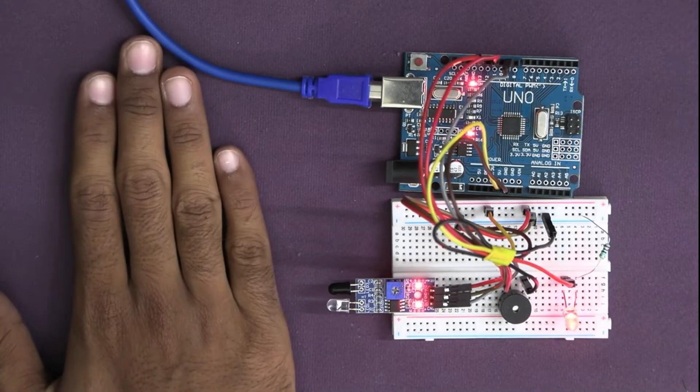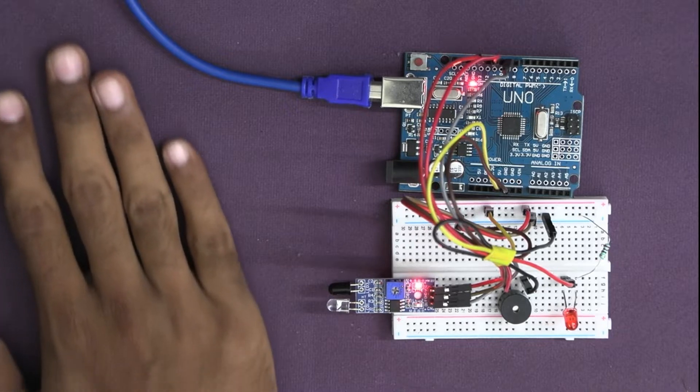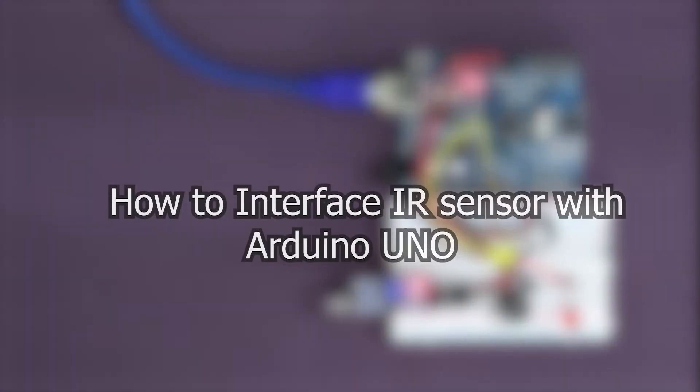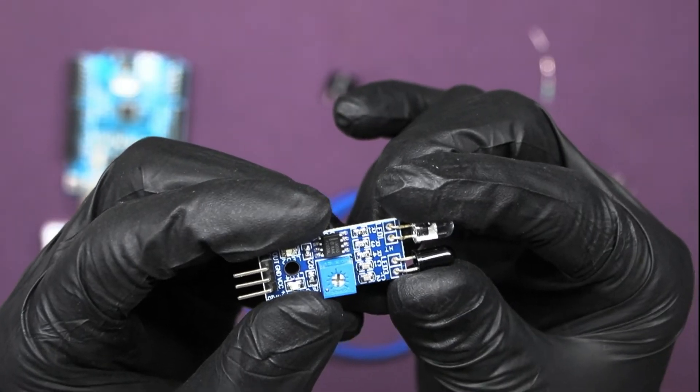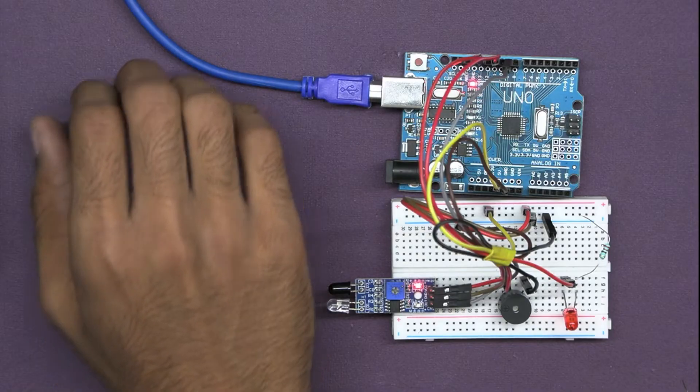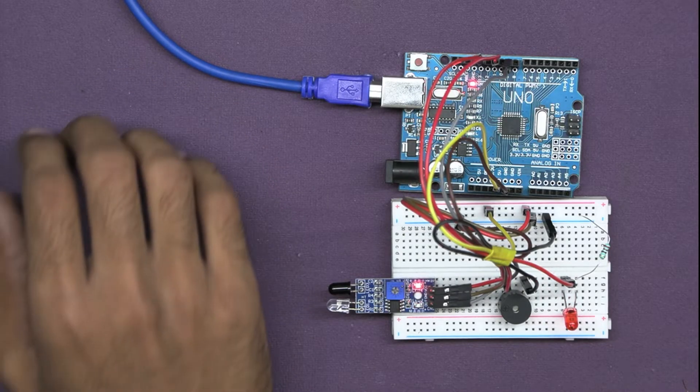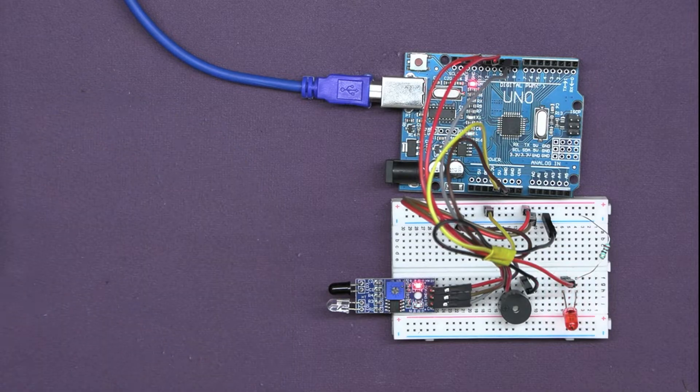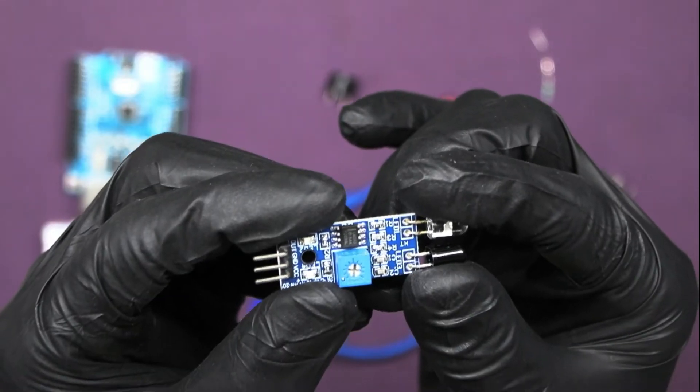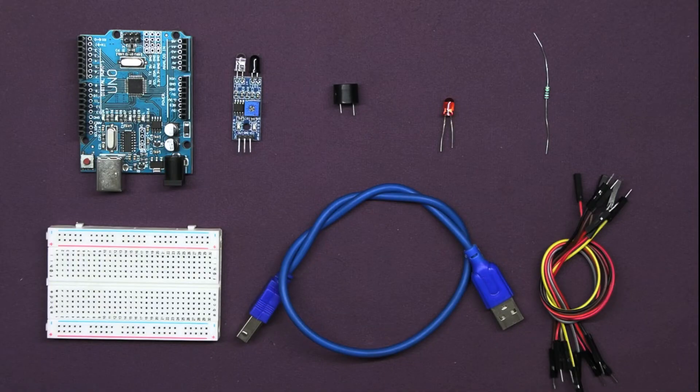Welcome back learners to our channel RoboArmy. In today's video, we are going to learn how to interface an infrared sensor or IR sensor with an Arduino UNO to create a simple object detection system. We will also control a buzzer and an LED based on the sensor's output. So, let's start.